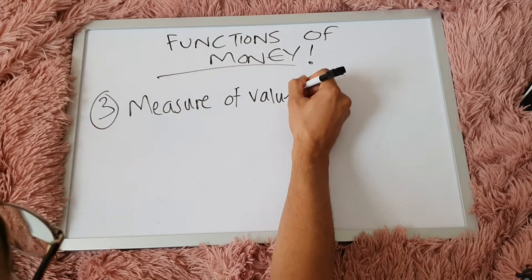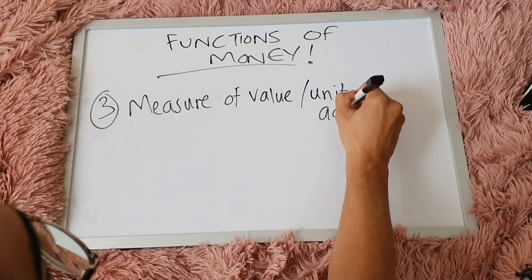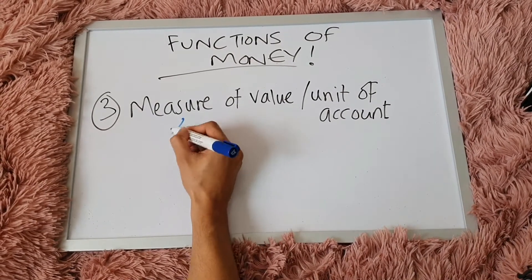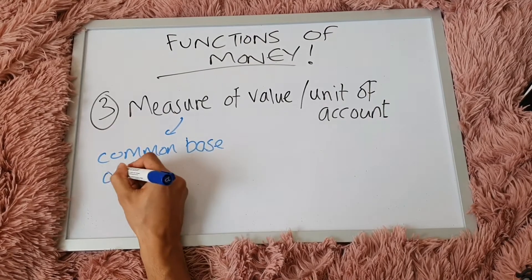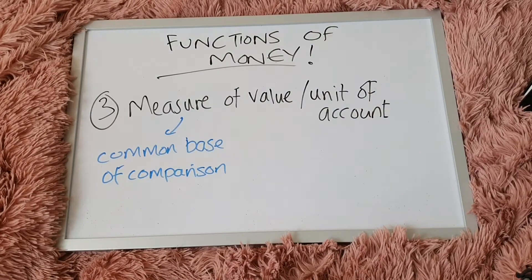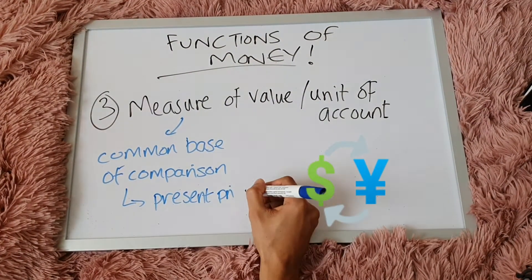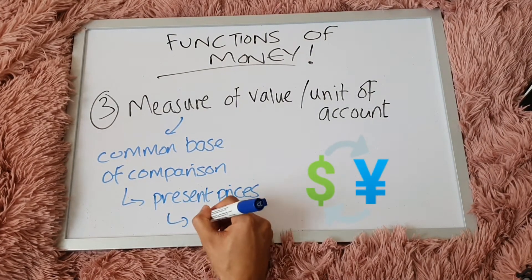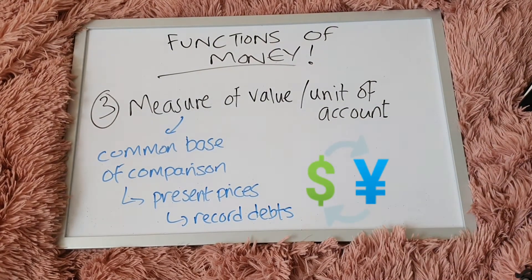Thirdly, the third function of money is that it is a measure of value and also a unit of account. As a unit of account, money serves as the common base of comparison that people use to present prices and also to record debts. In terms of presenting prices, if you go to the market, for example, from one trader to the next, you'll notice that they've got it in a certain currency, presented as a price.